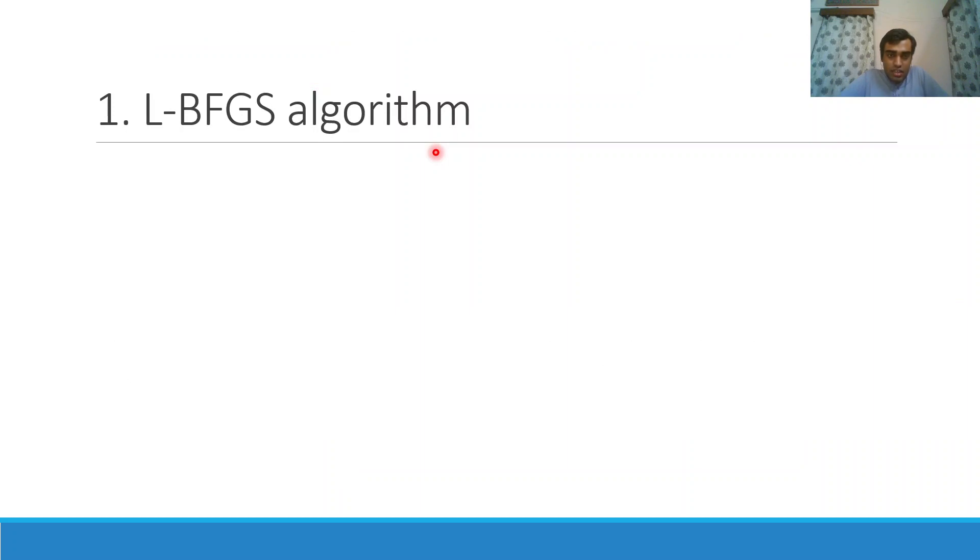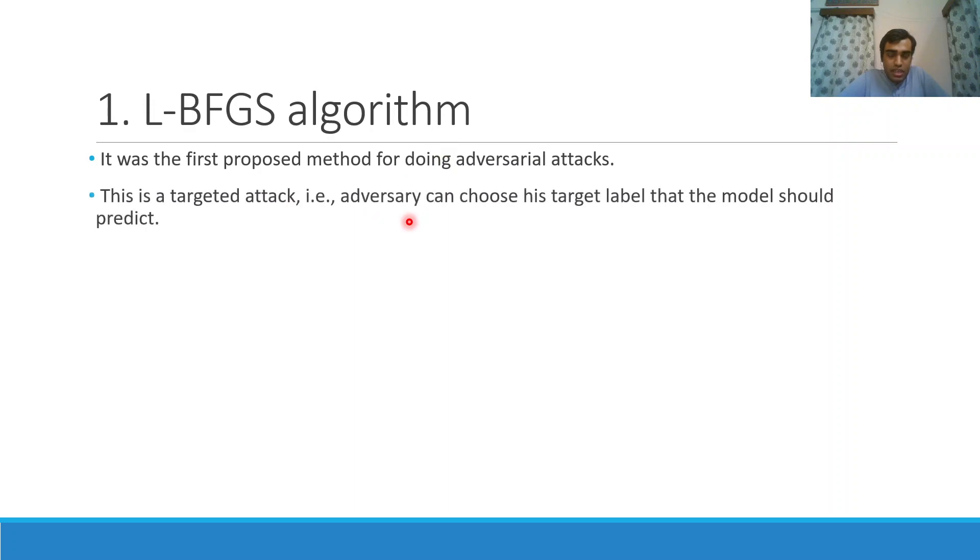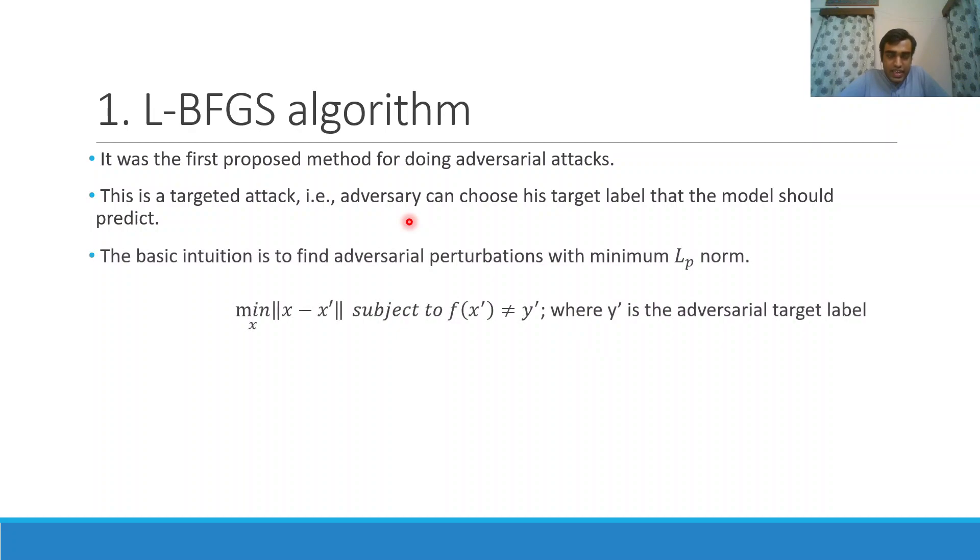Now let's see the image manipulation and adversarial attack techniques. First is the LBFGS algorithm which was the first proposed method for doing adversarial attacks. Here the adversary can literally choose his target label that he wants the DL network to be fooled into. Next he will take a sample image and then try to perturb it. The basic intuition is that the perturbation should be at minimum distance from the original image and also the sample image gets classified to the adversarial target label.